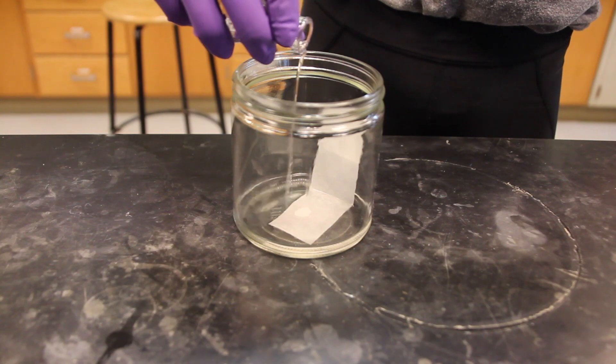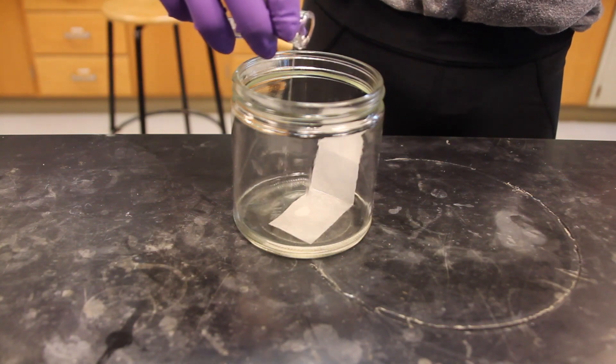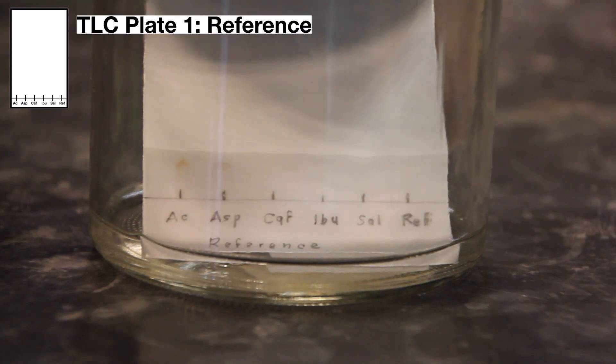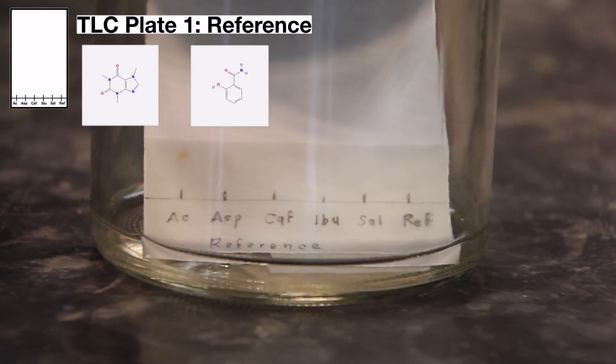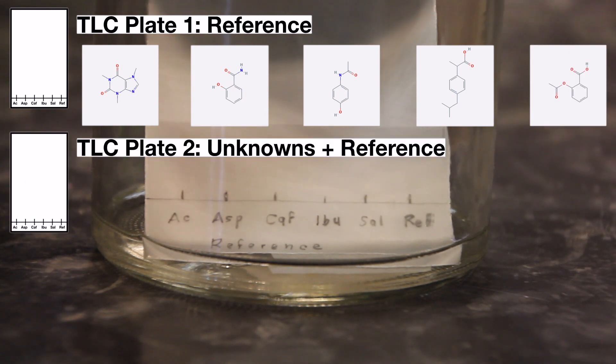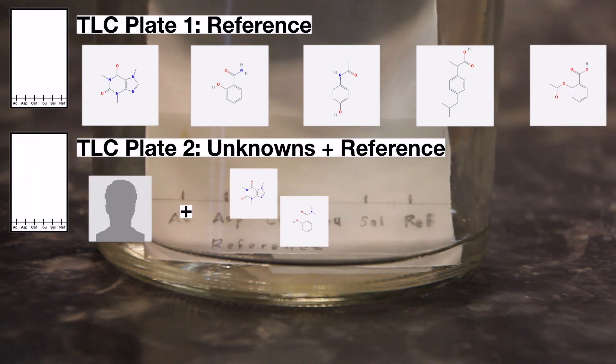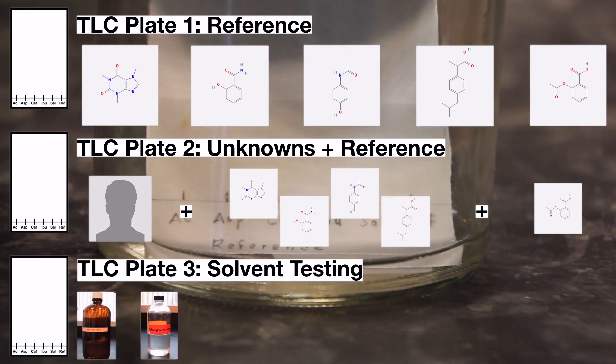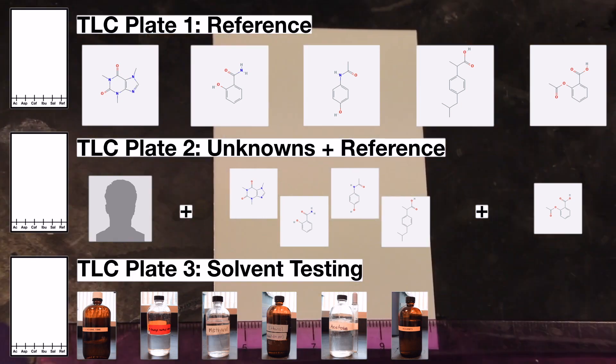Next, pour 2-butanone into the jar until it reaches a depth of about 0.5 cm. One of your TLC plates will be used to run the separate reference compounds to determine their individual RF values. Your second plate will be used for the chromatography of a mixture of the known compounds plus the unknown. Your third plate will be used in a team exercise to test the effect of different solvents on RF.